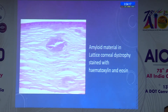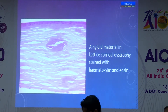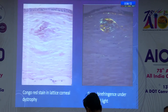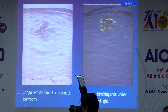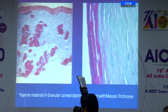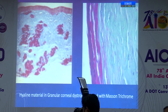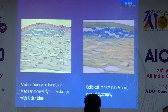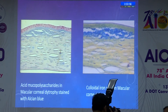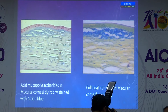This picture shows amyloid material in lattice corneal dystrophy stained with hematoxylin and eosin. This picture shows Congo red stain in lattice corneal dystrophy and the characteristic apple-green birefringence under polarized light. This shows hyaline material in granular corneal dystrophy staining bright red with Masson trichrome stain. These are acid mucopolysaccharides and glycosaminoglycan material in macular corneal dystrophy stained with Alcian blue.